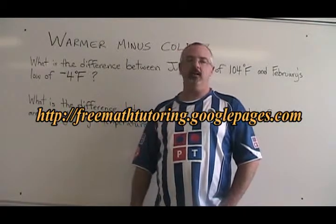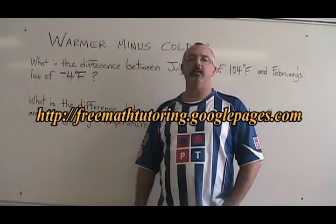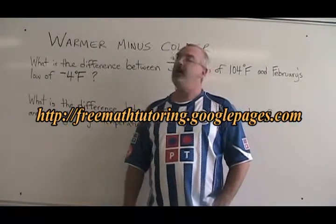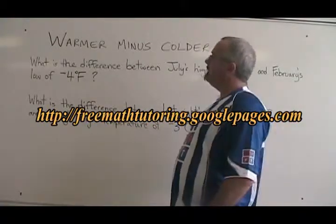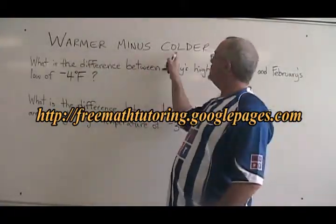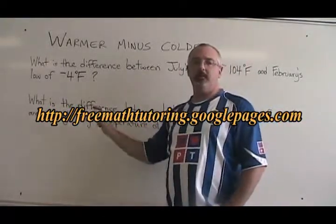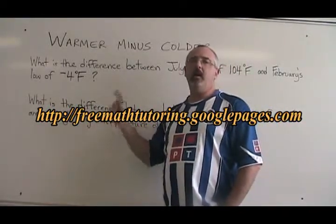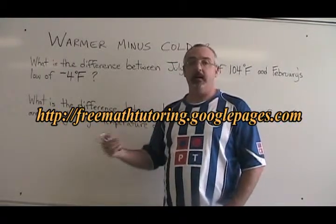In secondary one integers courses, sometimes we are asked the difference between two temperatures. There is a trick for finding the answer which always works, and I call it warmer minus colder. It simply means you write the warmer temperature first, then you put a minus sign, and then you write the colder temperature, including a sign if it has one.